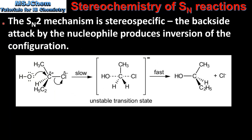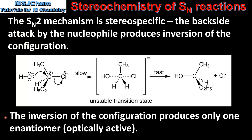Next we look at the SN2 reaction. The SN2 mechanism is stereospecific. This means that the backside attack by the nucleophile produces inversion of the configuration. Here we have the mechanism for an SN2 reaction. If we look at the starting reactant and the final product we can see that there is an inversion of the configuration. The inversion of the configuration produces only one enantiomer, which means that the product is optically active.